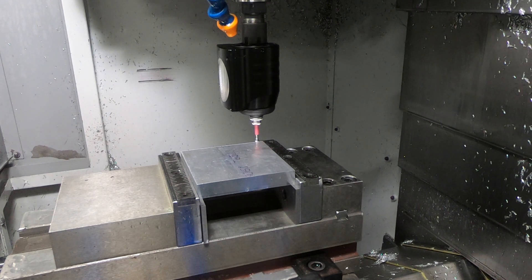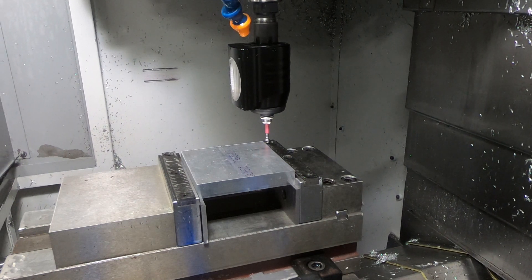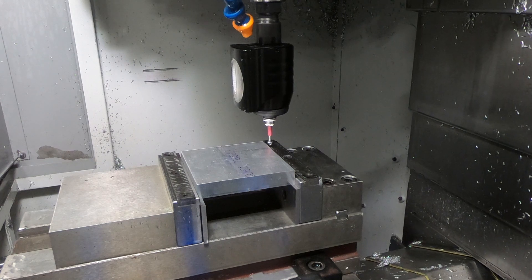After this, it's a matter of using the hymer to pick up the back left corner again, and then I can start milling the top side.